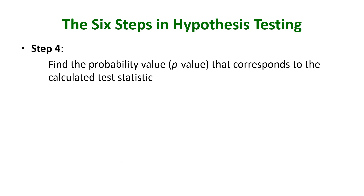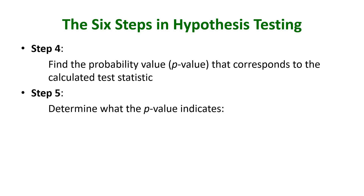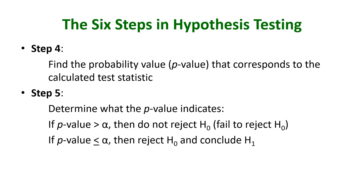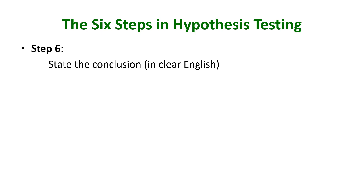Step four: you find the probability value, called the p-value, that corresponds to that test statistic. Step five: you determine what the p-value indicates. If the p-value is greater than alpha, you do not reject the null — or another way of saying that is, you fail to reject the null. If the p-value is less than or equal to alpha, you reject the null and conclude the alternative. Remember the saying: if the p-value is low, H0 must go.